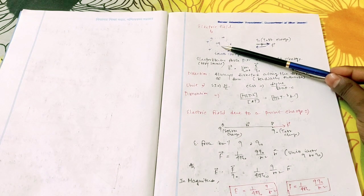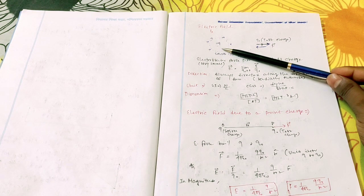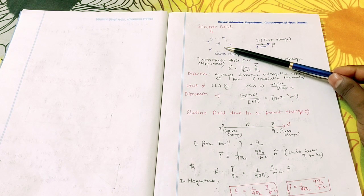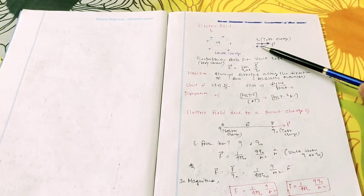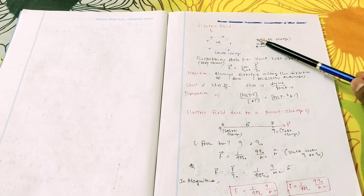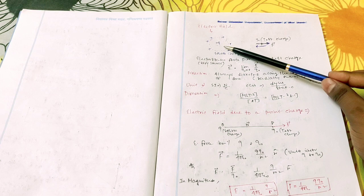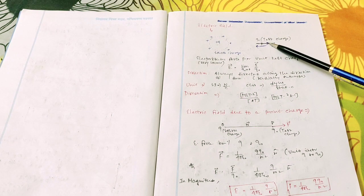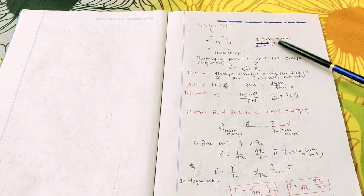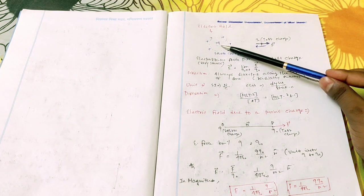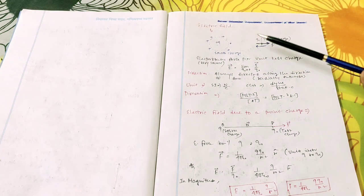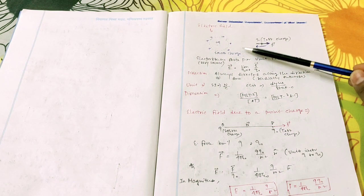The source charge is plus Q. For plus Q, the force is always directed radially outward because both charges are positive and the nature is repulsive. If there is a negative source charge, then the direction will be radially inward.